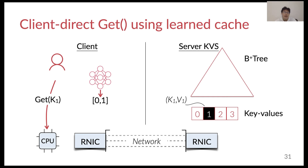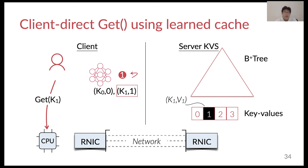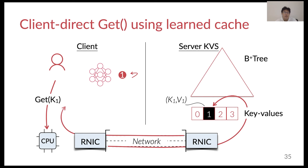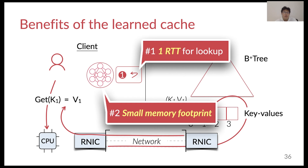Note that the learned model guarantees that k1 must be in the predicted locations. So given these predicted locations, we can now use one RDMA read to check the actual positions of k1. We do this by reading the corresponding keys at those locations back to the client. After fetching all the keys to the client, we can identify that the true location of k1 is at position 1. Consequently, we can use another RDMA round-trip to read the key's value back to the client. There are two direct benefits of using a remote learned cache: first, it only requires one round-trip to look up a given key; second, the model has ultra-small memory, which means it is possible for us to cache them all at the client.